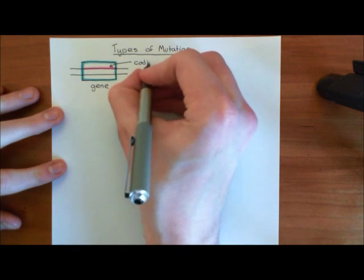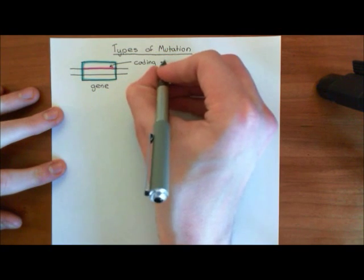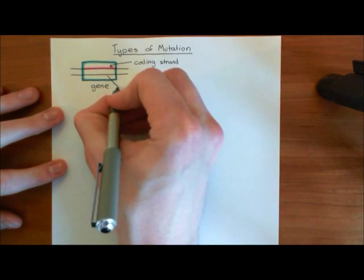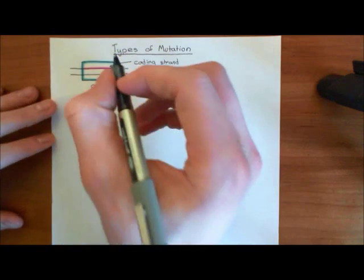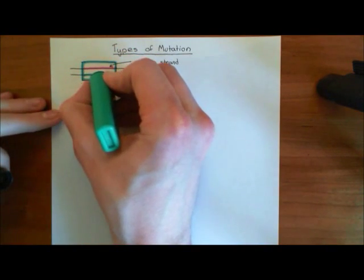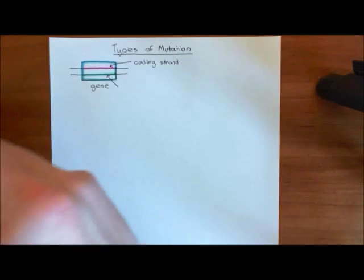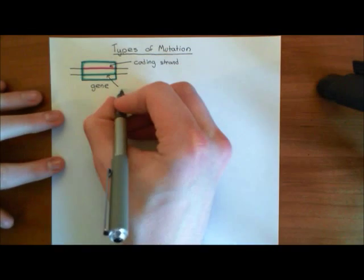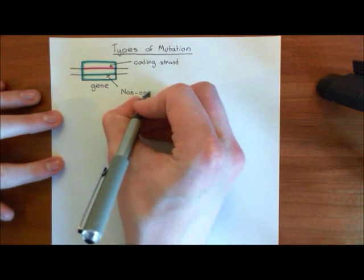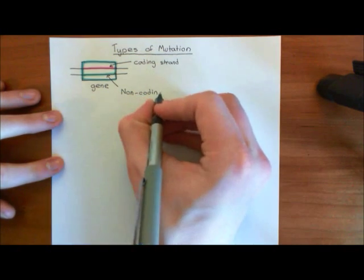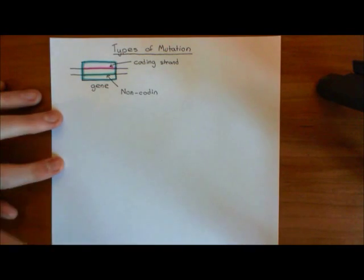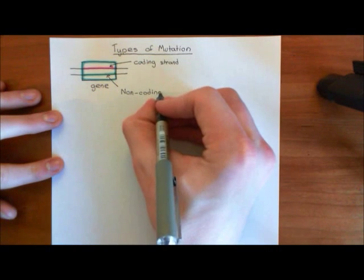This strand is known as the coding strand. The strand that's not going to be used by RNA polymerase 2 to produce a piece of mRNA is known as the non-coding strand, coloured in turquoise. RNA polymerase 2 will never work its way along the non-coding strand to produce a piece of mRNA, which will then go on to be translated into a piece of protein.